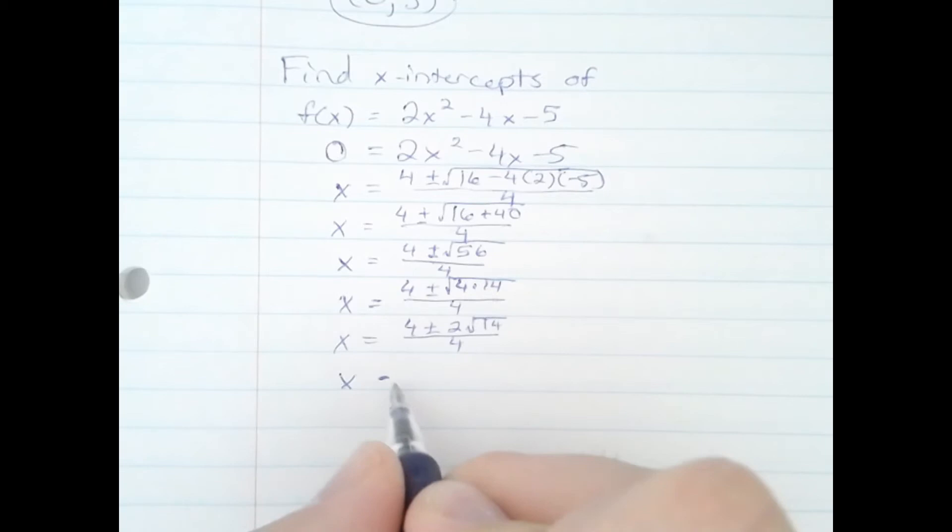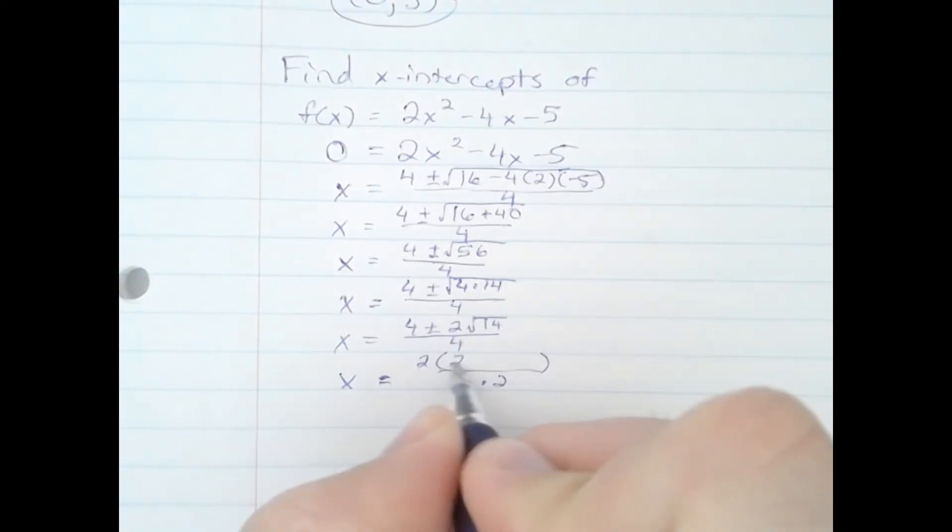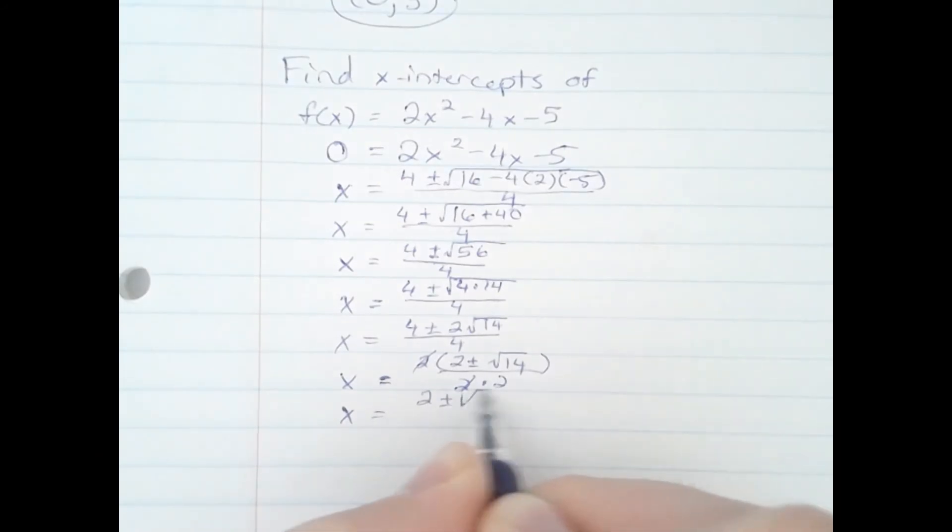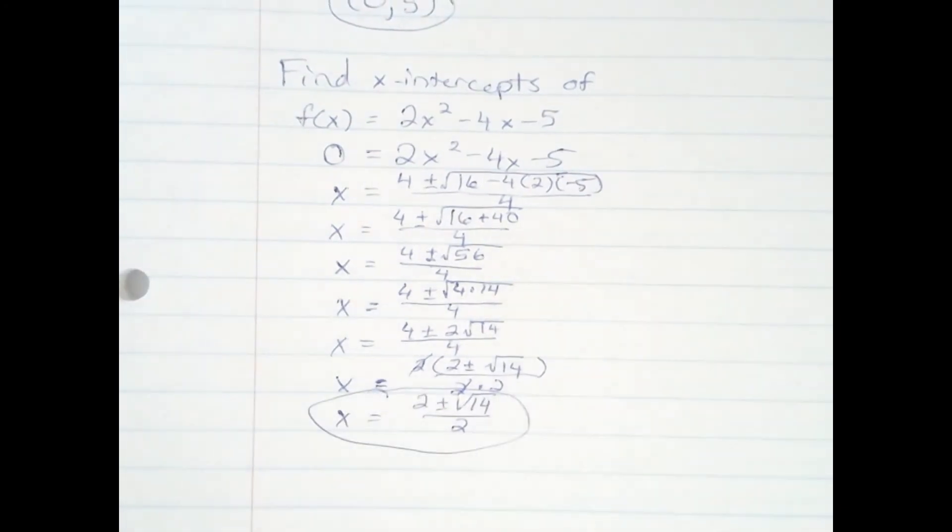And then to simplify further, I will take out a 2 from the top and the bottom. The top, I'm left with 2 plus or minus radical 14. This 2 and this 2 cancel, giving me an answer of 2 plus or minus square root 14 all over 2. And that is our 2 answers to the quadratics. It's also the 2 x-intercepts.